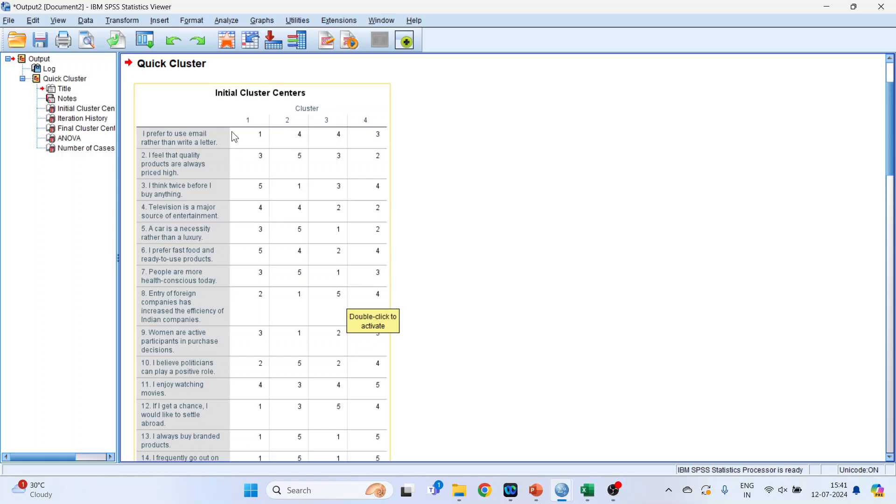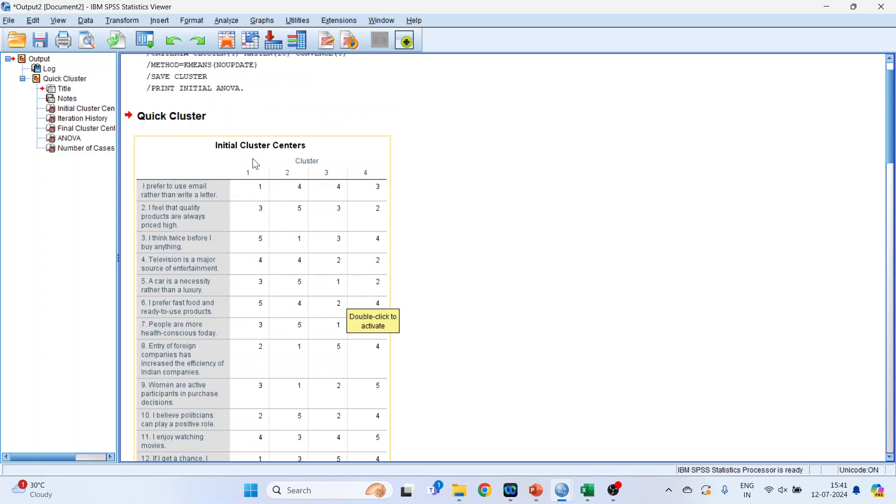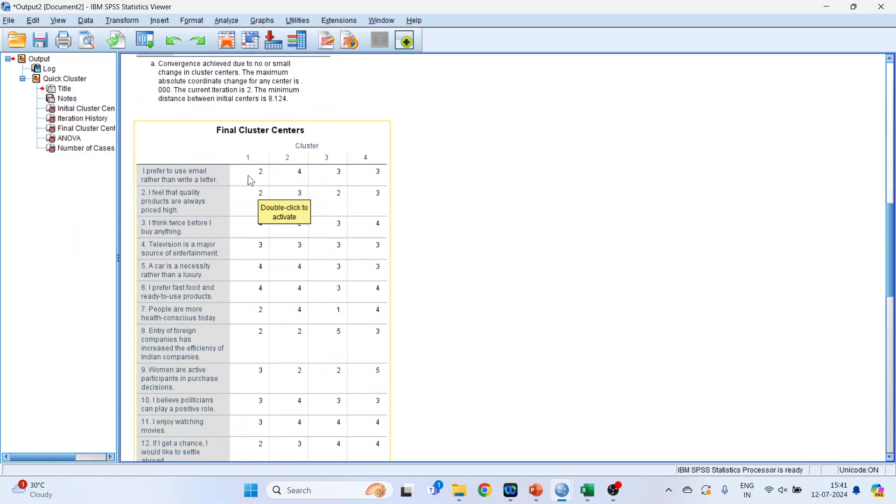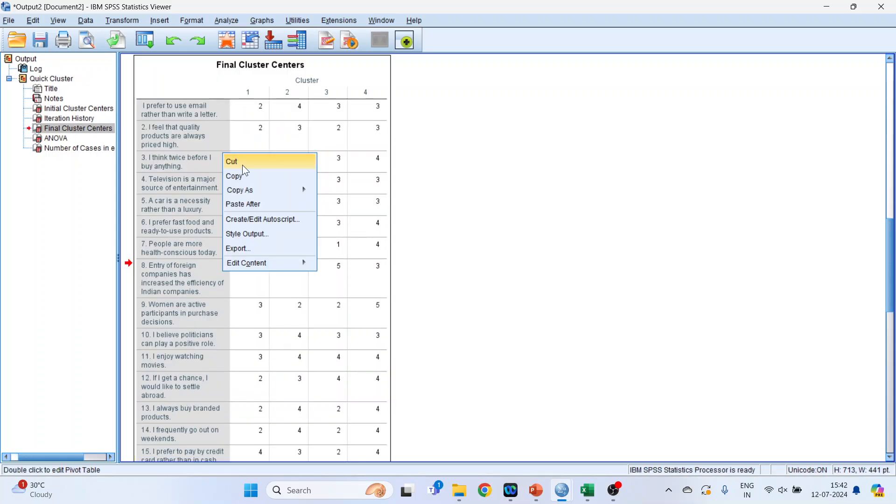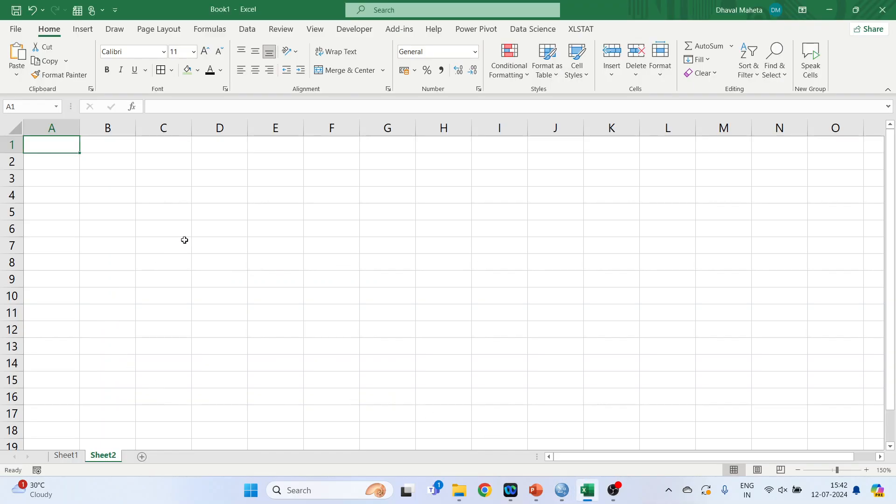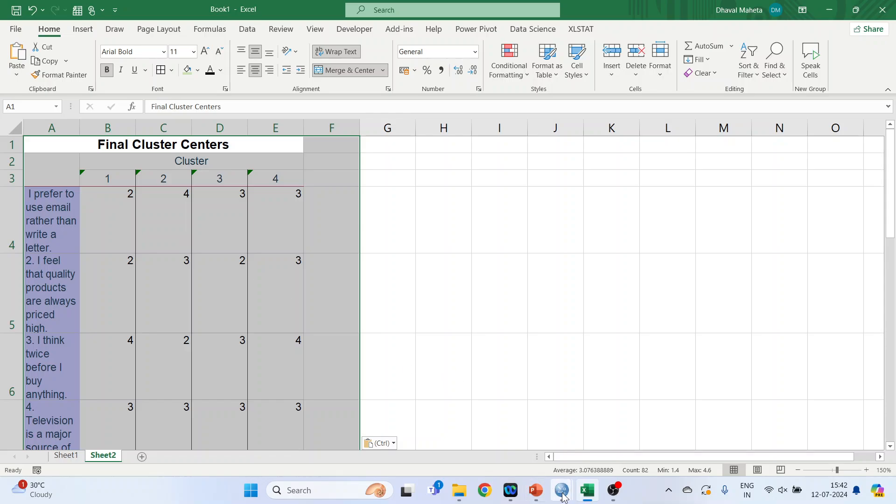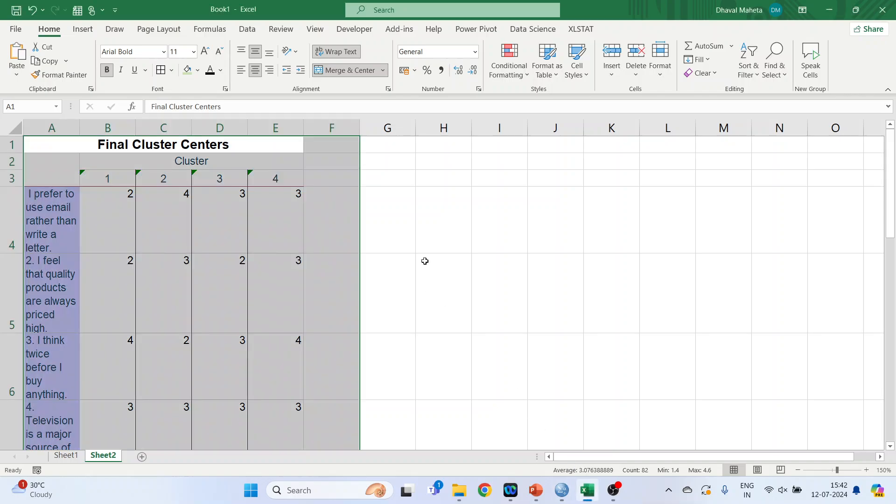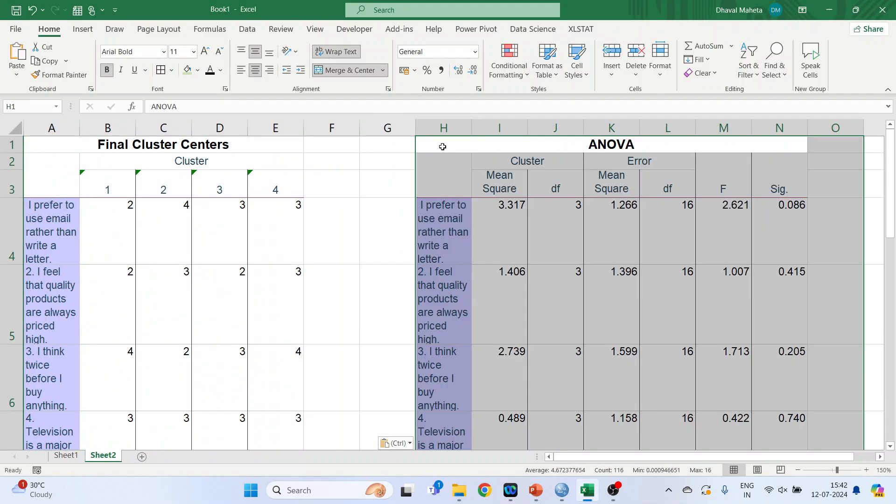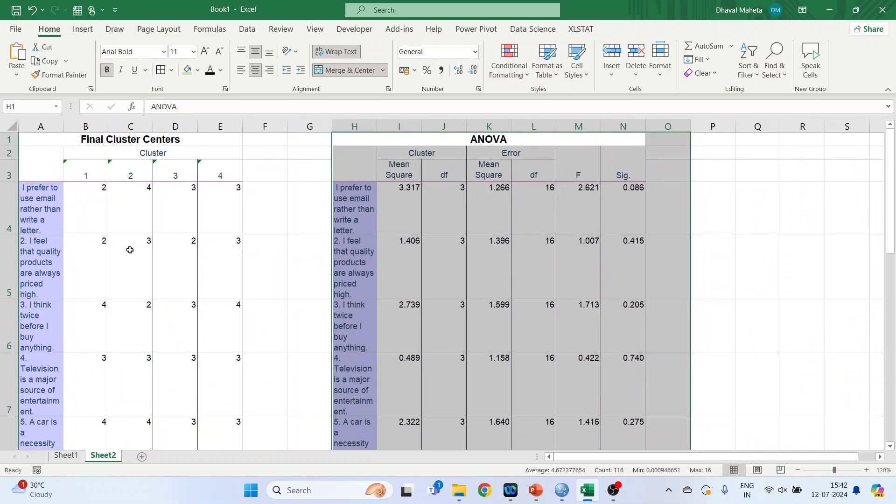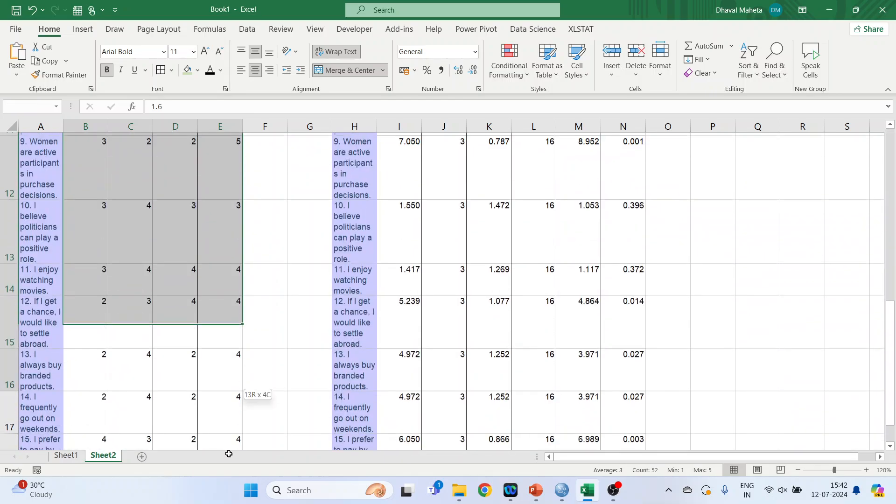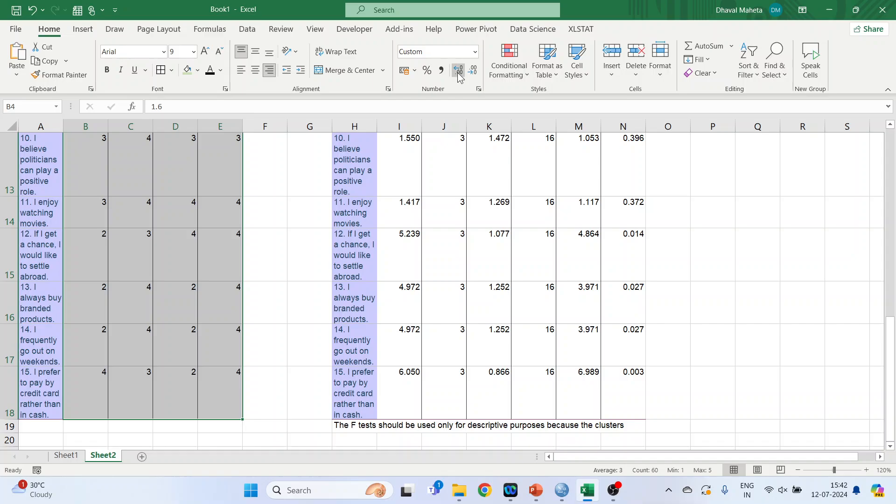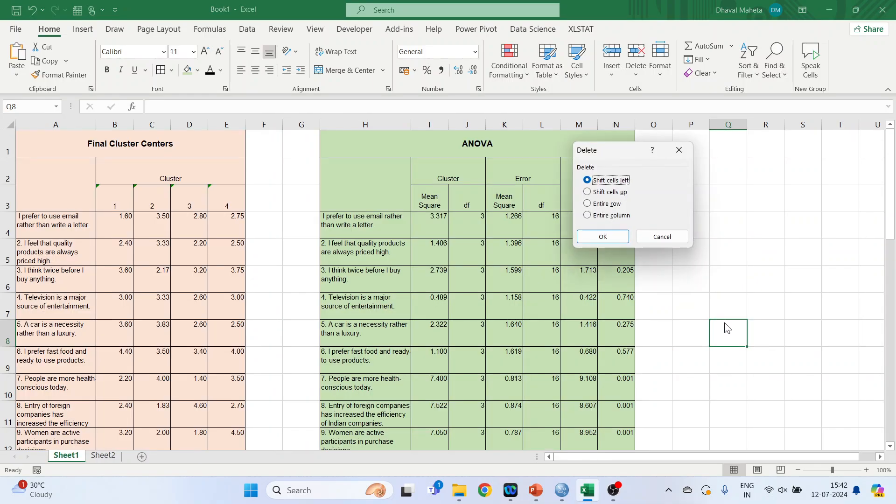So we got the output. These are the initial cluster centers. We will be doing the interpretation from final cluster centers. Iteration history. Final cluster centers. Now copy this. Right click. Copy. Again go back in SPSS and copy the ANOVA table. Right click. Copy. Now we will have to increase the decimal in this final cluster centers. These are the mean values. So how we can do? Just select it and increase the decimal from here.